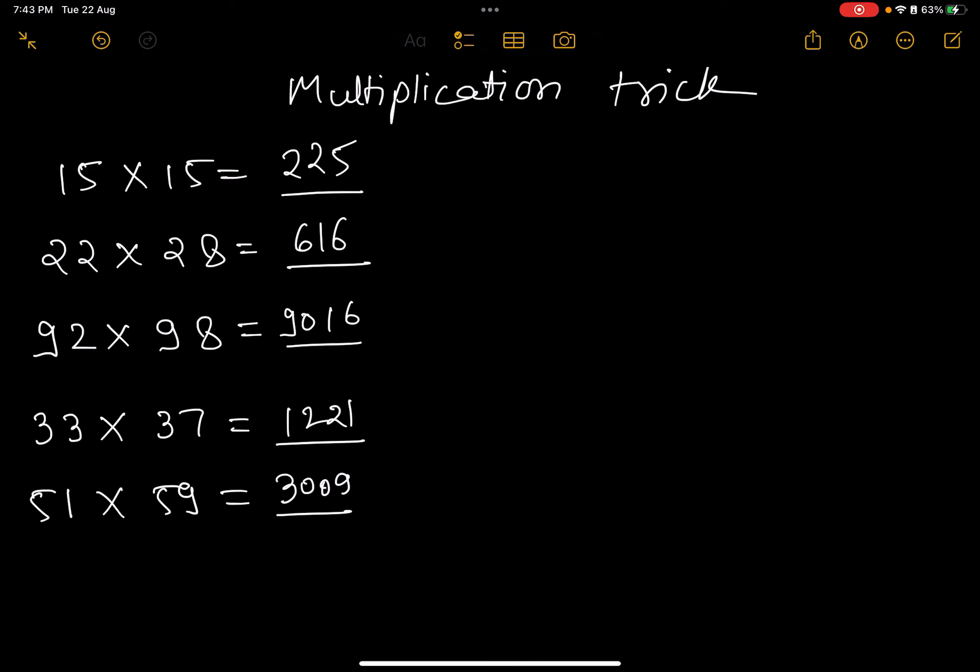Let's learn how this works. When multiplying 15×15, I first multiply the last digits: 5×5 equals 25. For the first digits, I multiply this digit by the next number, which is 2 (what comes next to 1 is 2). So 1×2 equals 2, making the answer 225.